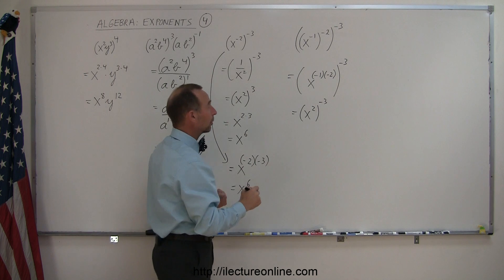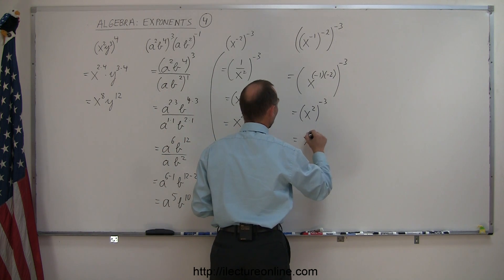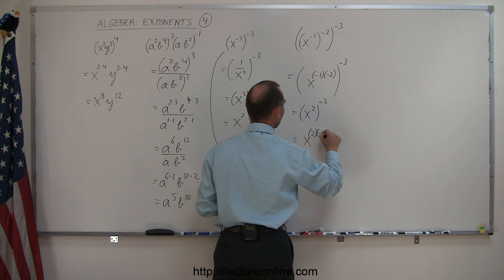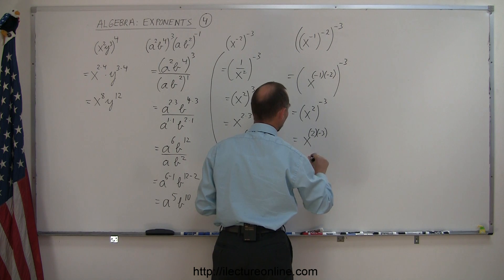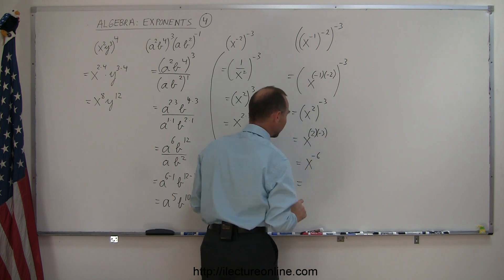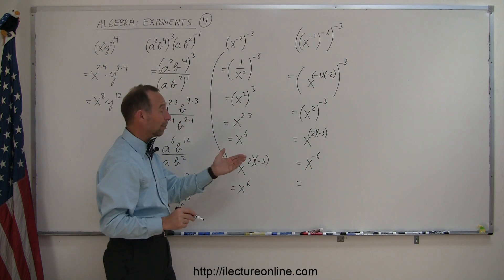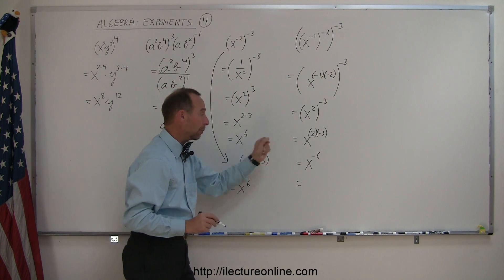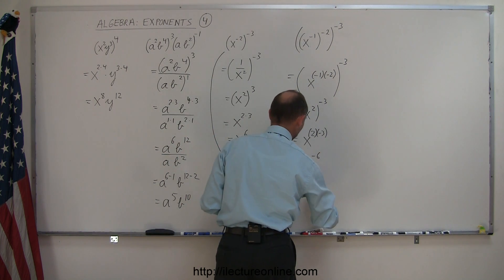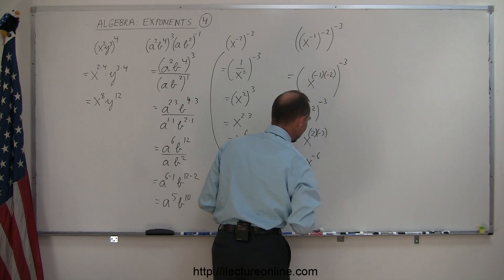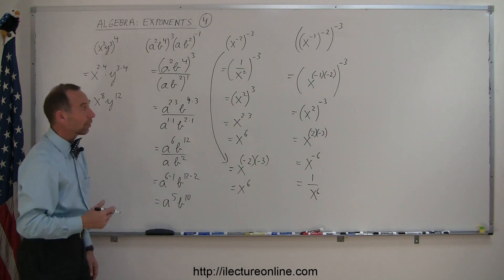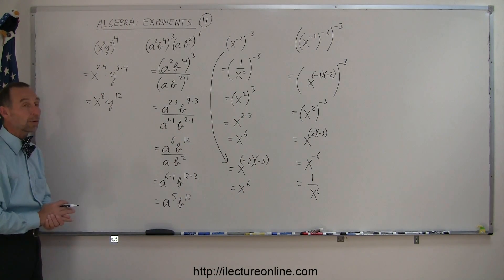And then I can go ahead and multiply those together. So this is equal to x to the 2nd power times negative 3 power, which is equal to x to the minus 6 power. And now I apply the rule where I bring the x to the denominator to make it into a positive exponent. This is 1 over x to the 6th power. And that's the final answer on that one. So this is how you deal with exponents and when exponents are raised to exponents.